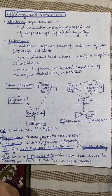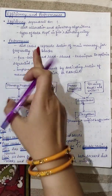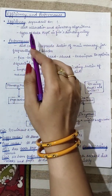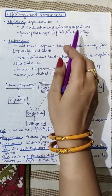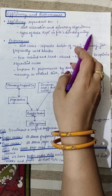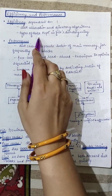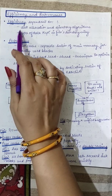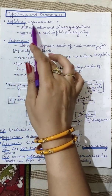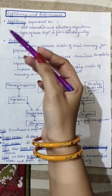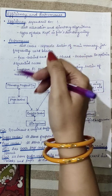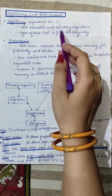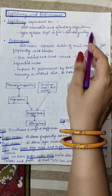The topic for today's class is about efficiency and performance of the file system. Efficiency depends on the disk allocation and the directory algorithms which are used, and the types of data which is kept in the file directory entry. The allocation methods can be contiguous, indexed, or linked allocation, and there are directory algorithms as well.